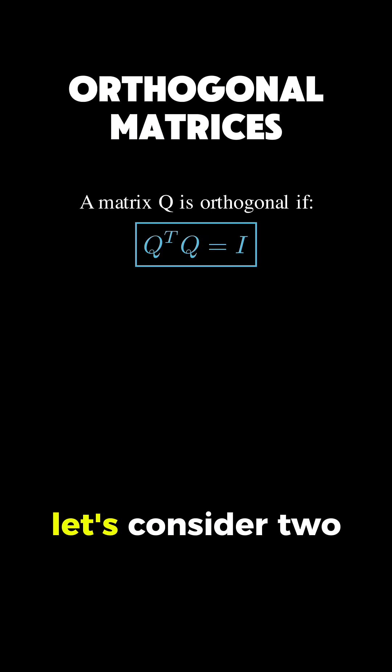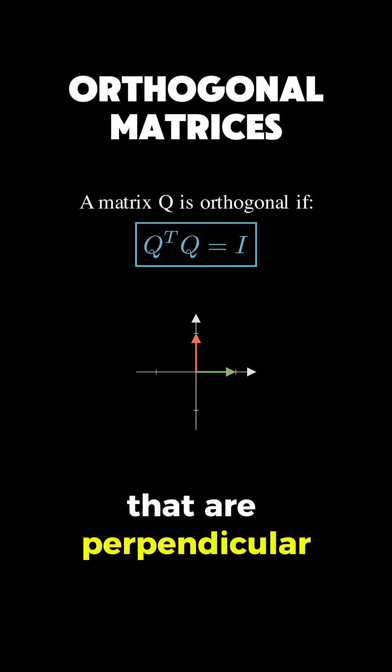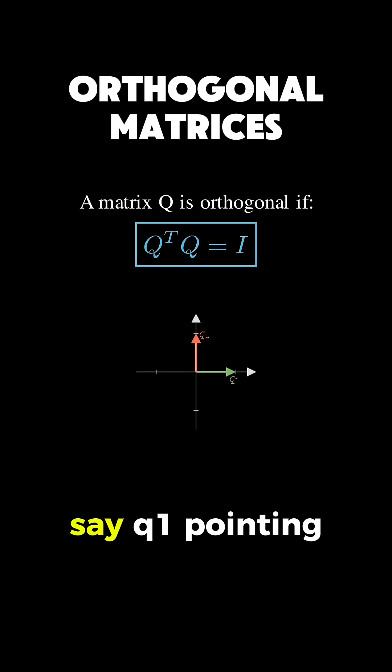To visualize this, let's consider two unit vectors that are perpendicular to each other. Say Q1 pointing to the right and Q2 pointing up. These satisfy our conditions.